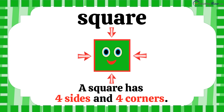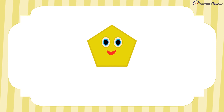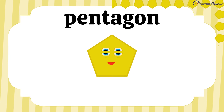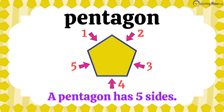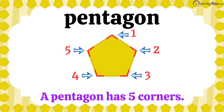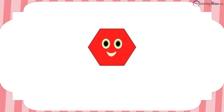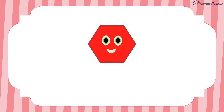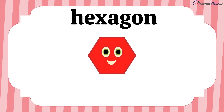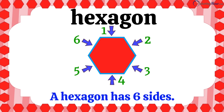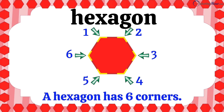What do we have next? A pentagon! A pentagon has five sides and five corners. Up next is a hexagon. A hexagon has six sides and six corners.